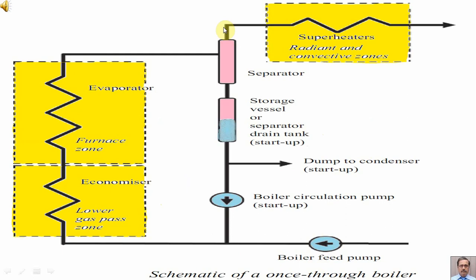At the separator, steam and water droplets are separated. The storage vessel — also called the separator drain tank — collects the water droplets. Excess water is dumped to the condenser. Water collected in the storage vessel is circulated back to the evaporator by the boiler circulation pump.